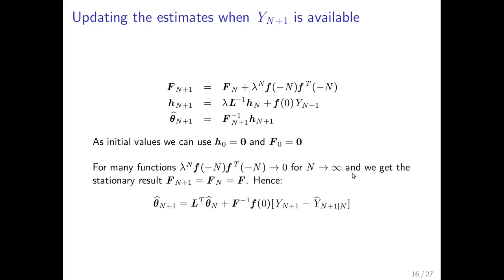Now often as I mentioned before lambda to the n power times f of minus n f transpose of minus n will go to zero when n becomes large. So we could make a formula where you say that F becomes stationary. At some point this will converge.